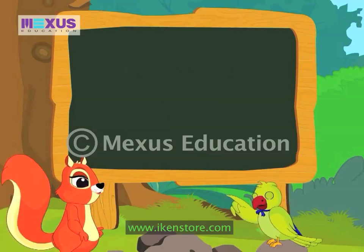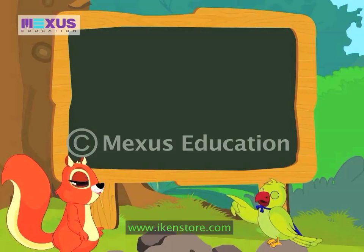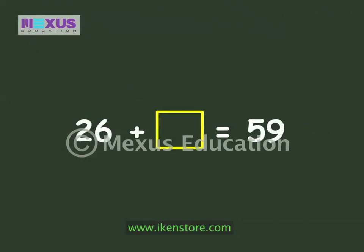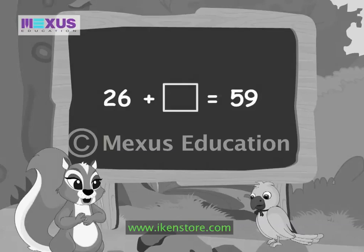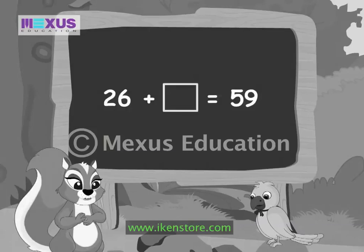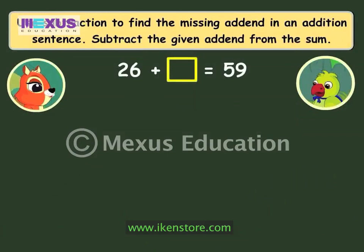Well done, Amber! That was quick. Now tell me if you can find the missing number in this addition sentence. One of the numbers to be added — an addend — is missing in this addition sentence, but the sum is given. I don't know how to find the missing number. Don't worry, I will help you. We can use subtraction to find the missing number in an addition sentence.